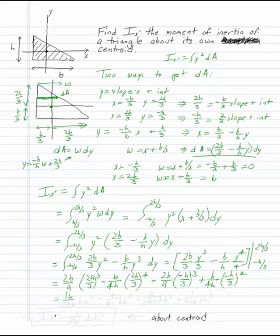If you multiply that out, that's 16 over 243 bh cubed here minus 4 over 81 bh cubed here plus 2 over 243 bh cubed plus 1 over 324 bh cubed.